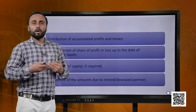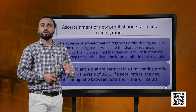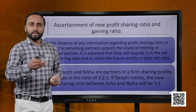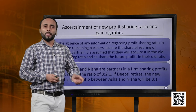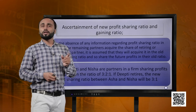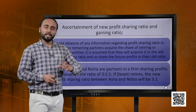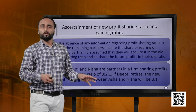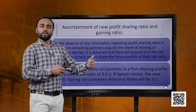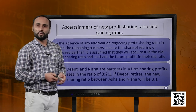The first thing we will learn is the calculation of the new profit sharing ratio and the gaining ratio. In the absence of any information — if the question does not give any information about the new ratio — we assume that the remaining partners will share their profits in the same ratio as was between them before. Let us understand this with the help of an example.